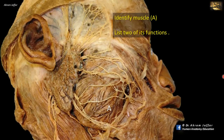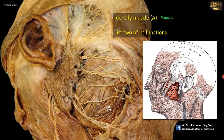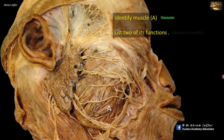Identify muscle A and list two of its functions. The muscle is the masseter, a muscle of mastication. It consists of two parts — superficial and deep. It originates from the zygomatic arch and is attached to the lateral side of the angle and ramus of the mandible. The superficial head is the larger part with fibers passing downwards and posteriorly; the deep head is smaller with fibers passing downwards and forwards, arising from the medial aspect of the zygomatic arch. During bilateral contraction, the muscle elevates the mandible, and the superficial fibers can also protrude the mandible.